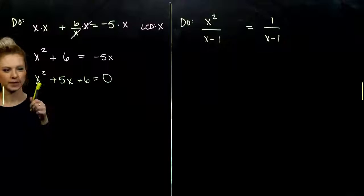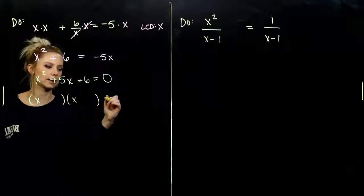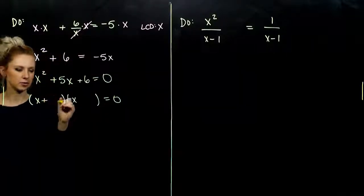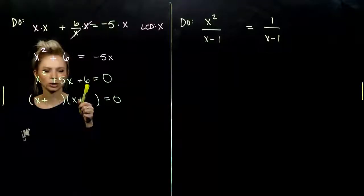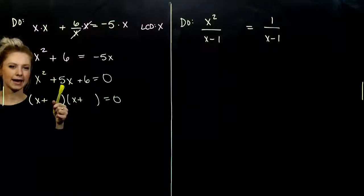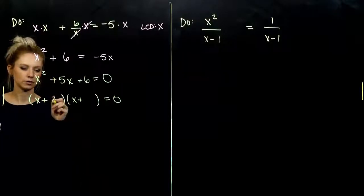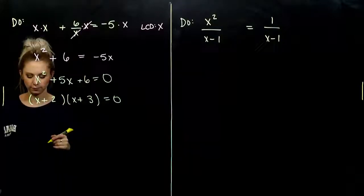So, we need to factor. I've got a one out on the front. And what about those signs? They're both positive, so that tells me these are both positive. And I need a combo to multiply to six and to five. So, what factors do we need? Two and three. Order doesn't matter.